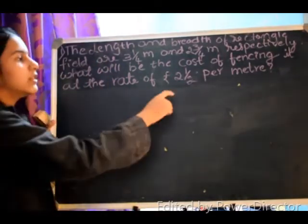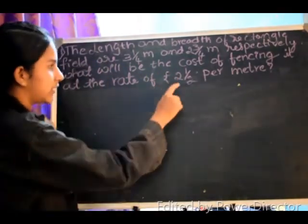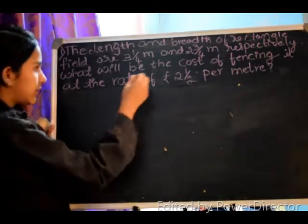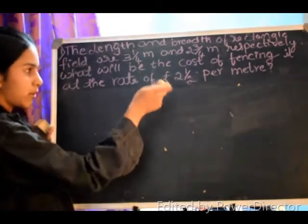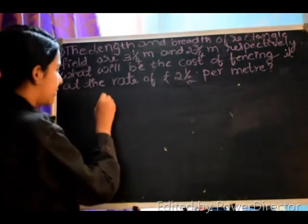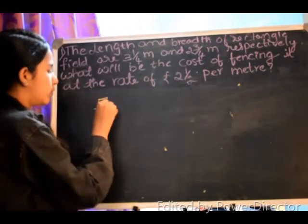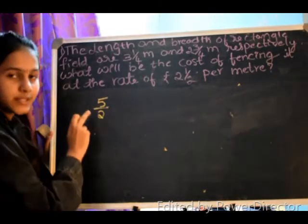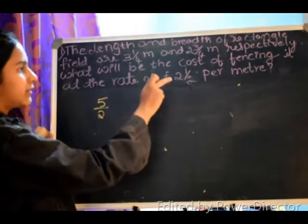They gave the cost of 1 meter fencing, that is 2 1/2. Let's convert 2 1/2 into improper fraction: 2 twos are 4 plus 1 equals 5. So 5 by 2 is the cost of fencing 1 meter.